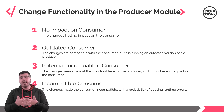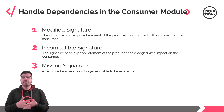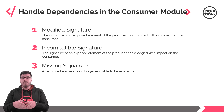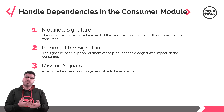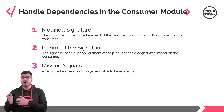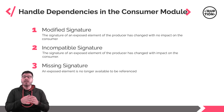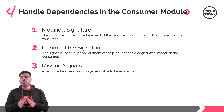When it comes to handling dependencies, we can have three types of actions. The modified signature, which means the signature of an exposed element of the producer has changed with no impact on the consumer, giving it no need to be refreshed.